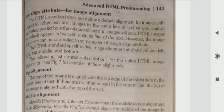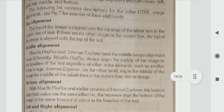We can use the align attribute for image alignment. The alignment of the image can apply to the text, align to the text. Now, top alignment. The top edge is aligned with the top edge of the tallest item in the current line of text.